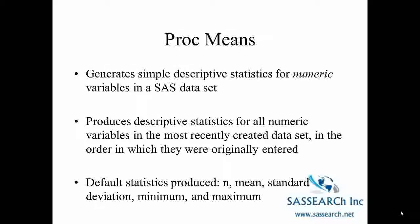PROC Means is used to generate simple descriptive statistics for numeric variables in your SAS dataset. It produces descriptive statistics for all numeric variables in the most recently created dataset in the order in which they were originally entered. If you just have a PROC Means and then a RUN, it is going to produce descriptive statistics, and these default statistics include N, which stands for the number of non-missing cases, the mean, the standard deviation, the minimum, and the maximum, for all of the numeric variables in the most recently created dataset.